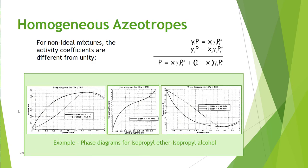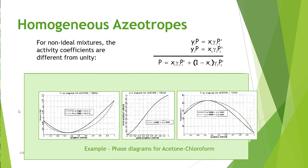This is an example of isopropyl ether and isopropyl alcohol that form an azeotrope. And this is acetone and chloroform that forms a high-boiling azeotrope.